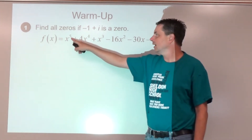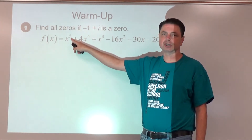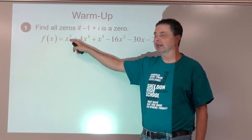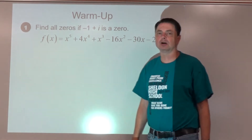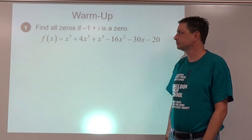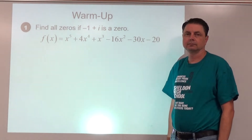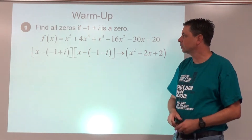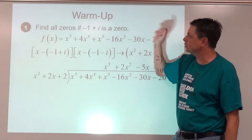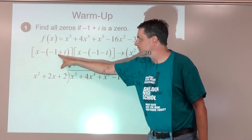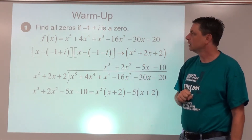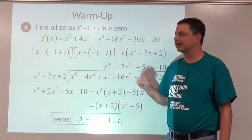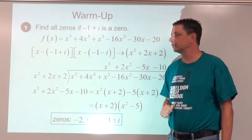Keep in mind this is a fifth-degree function, so it's probably going to have five zeros — there might be repeats, but there are going to be five zeros. A good way to get this started is to turn this into a factor. Since negative one plus i is a zero, negative one minus i is also a zero because of the conjugate pair.